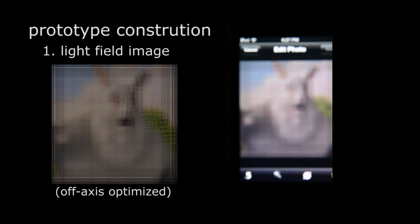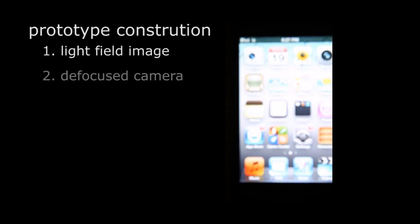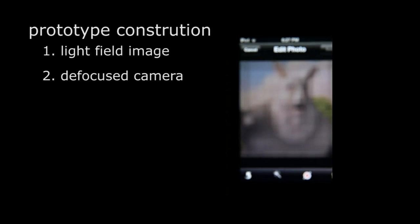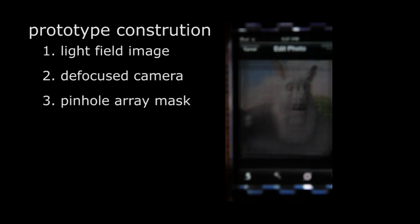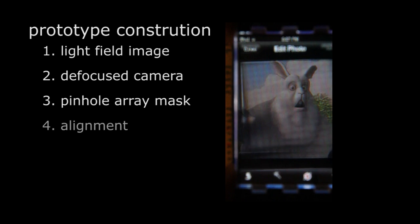We first show a pre-filtered light field image on the display. When viewed by the defocus camera, everything is blurred. Placing a pinhole array mask on top reveals a sharp image after some alignment.